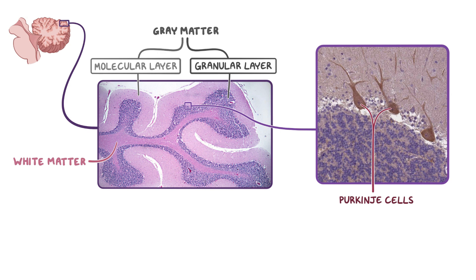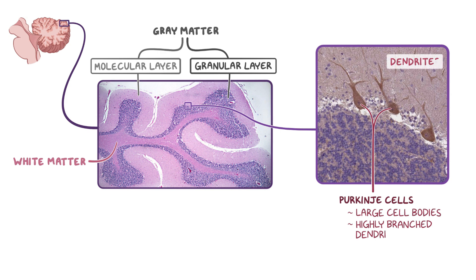Immunostaining was performed on this section of tissue in order to see the Purkinje cells more clearly by staining them dark brown. These neurons have very large cell bodies with a highly branched dendritic system that extends into the molecular layer and an axon that extends down through the granular layer, which is often hard to see even with immunostaining.